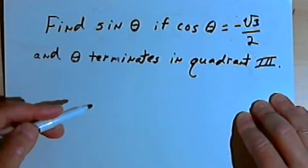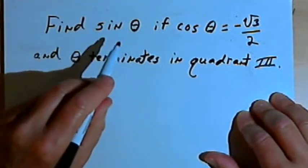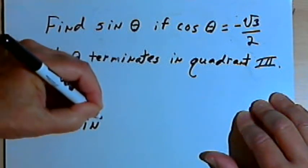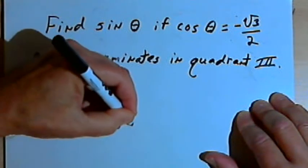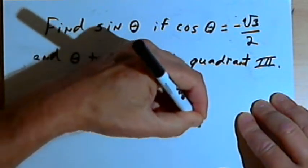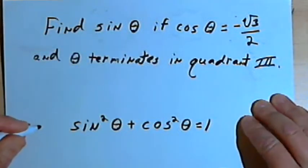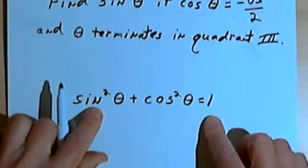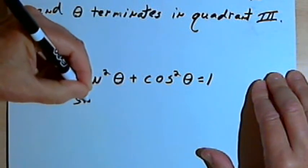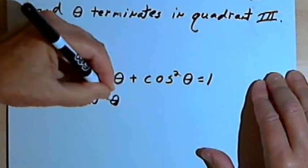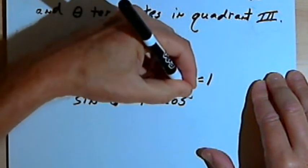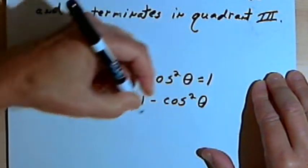We have a trigonometric identity that equates sines and cosines: the sine squared of theta plus the cosine squared of theta equals 1. So if we're looking for the sine of theta, let's get the sine squared by itself. We'll have sine squared of theta equals 1 minus the cosine squared of theta.